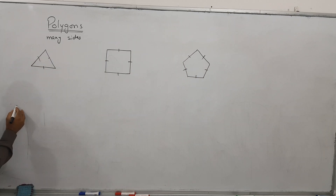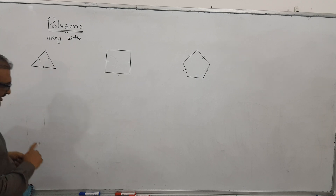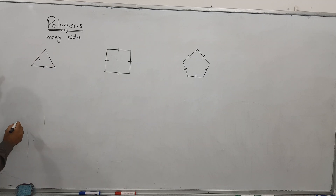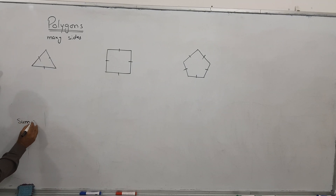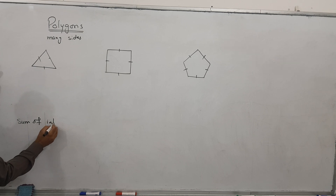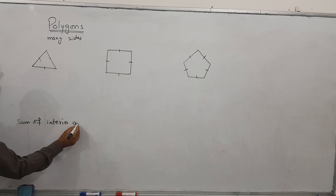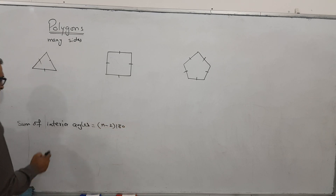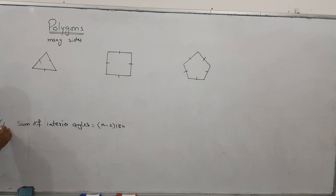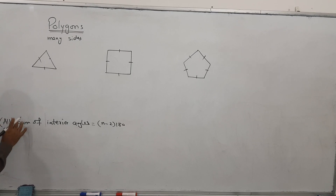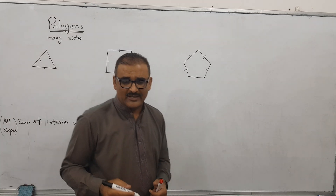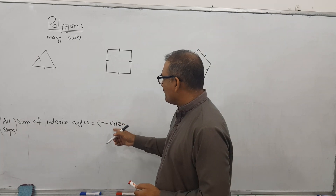We have a formula. Let me write it here. Sum of the interior angles. The formula is: N minus 2, times 180. This formula is for all shapes — regular or irregular.